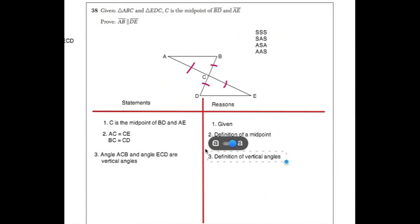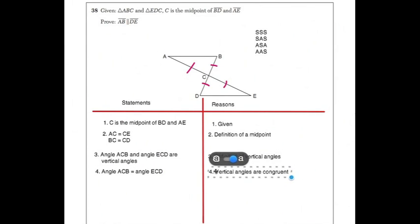So now you definitely have enough information to prove your triangles congruent. And we're going to see that we can do that through the side angle side postulate. So you're going to write that in as your step, and side angle side postulate would be your reason.